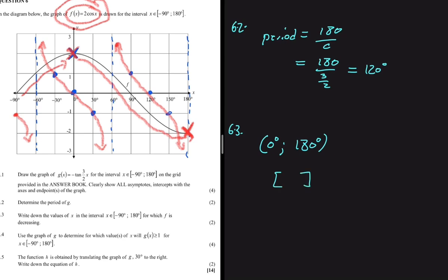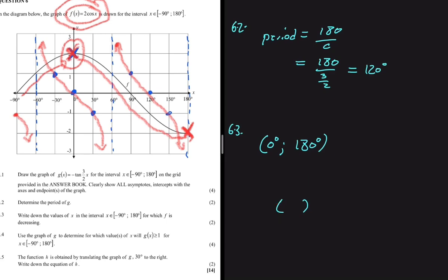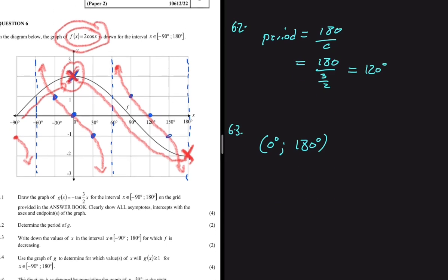So f is decreasing for x between 0° and 180°. We use round brackets (parentheses) to exclude both endpoints: 0° is excluded because at that point the function is neither increasing nor decreasing, and 180° is also excluded for the same reason. If we wanted to include a value, we'd use a square bracket instead.